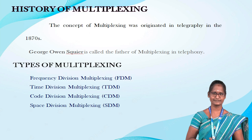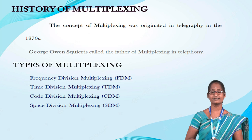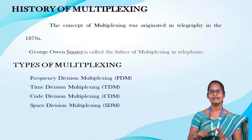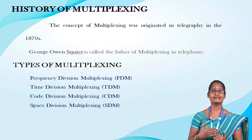History of multiplexing: The concept of multiplexing was originated in telegraphy in the year 1870s. Nowadays it is widely used in communication. George Owensquare is called the father of multiplexing in telephony. He created the development of telephone carrier multiplexing in the year 1910. Multiplexing is a technique that allows multiple simultaneous analog or digital signals transmission across a single data link. The main motive behind its development is to provide simple and easy communication, proper resource sharing, and utilization among multiple devices.